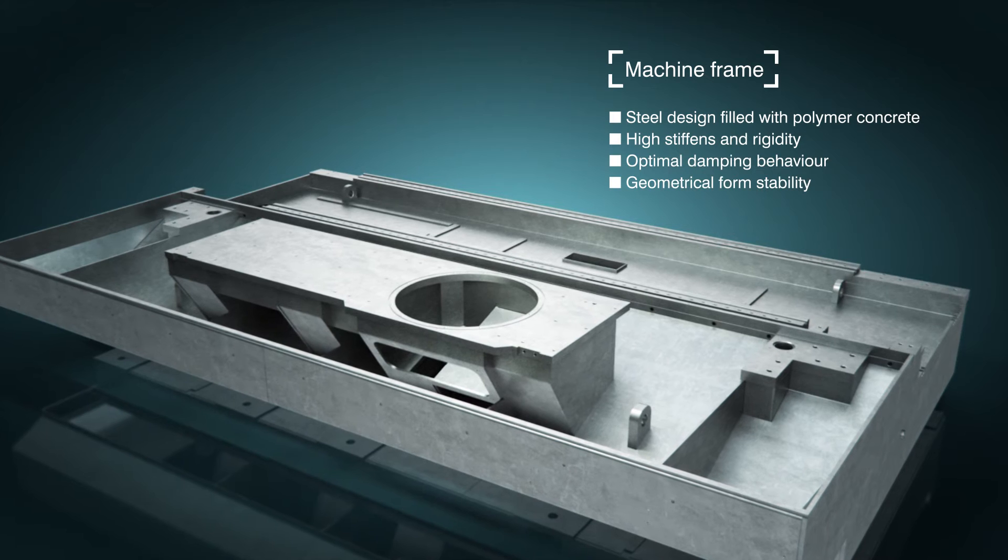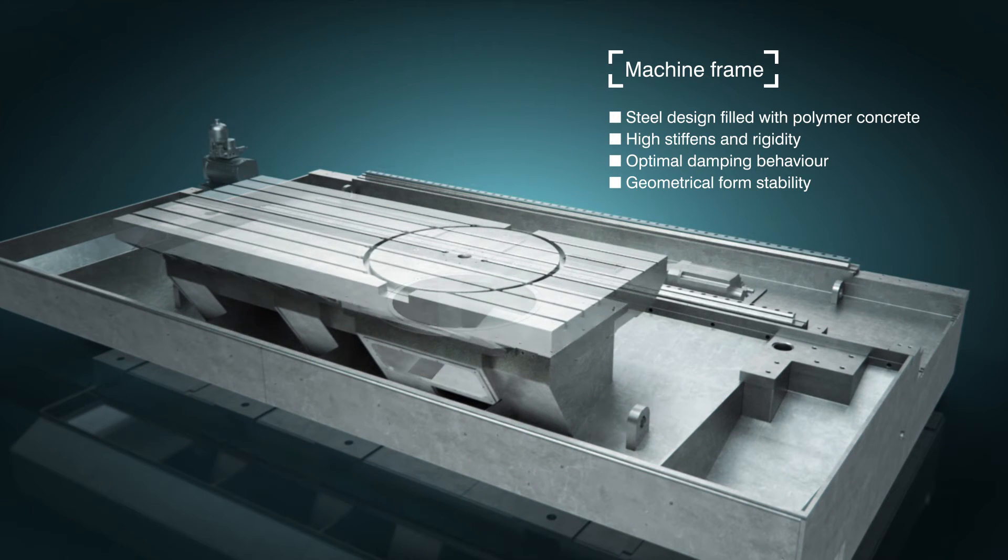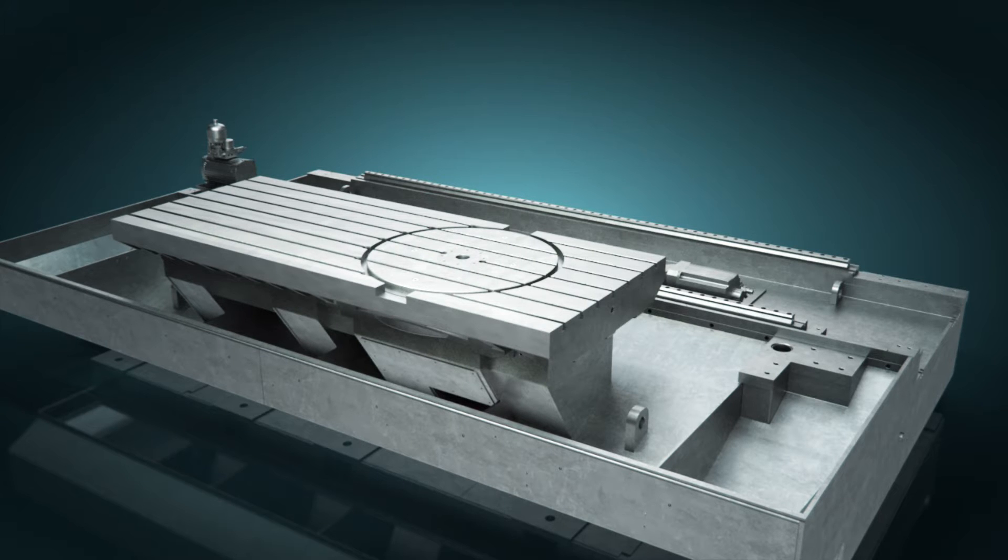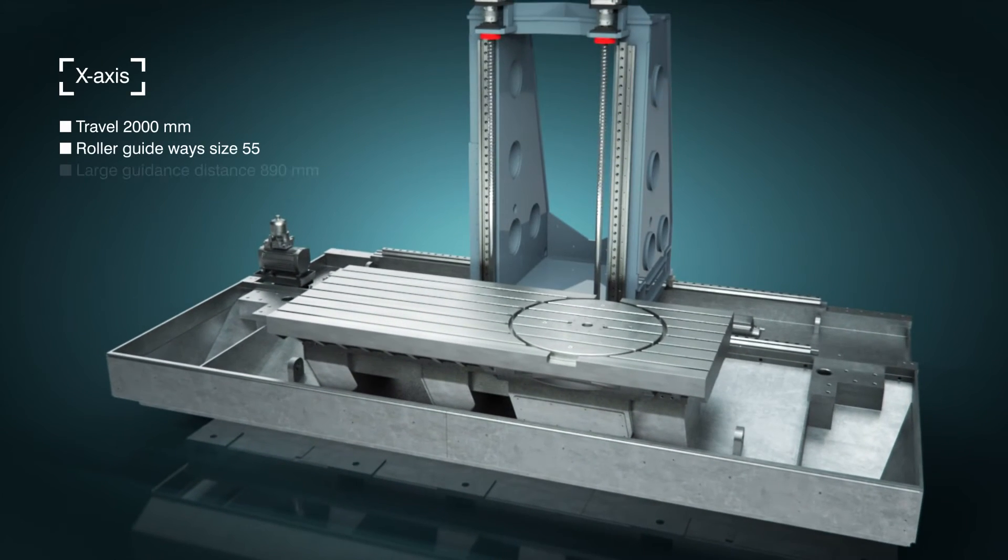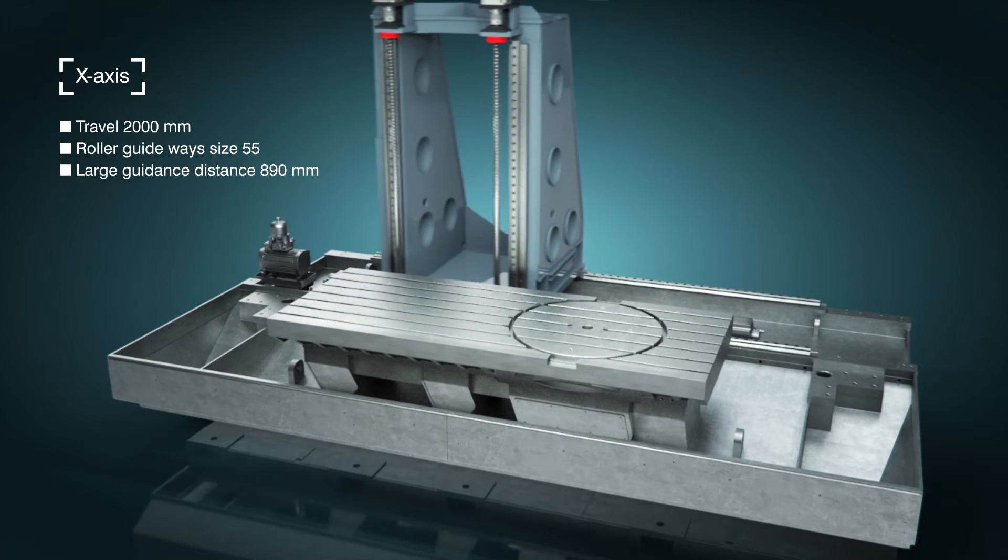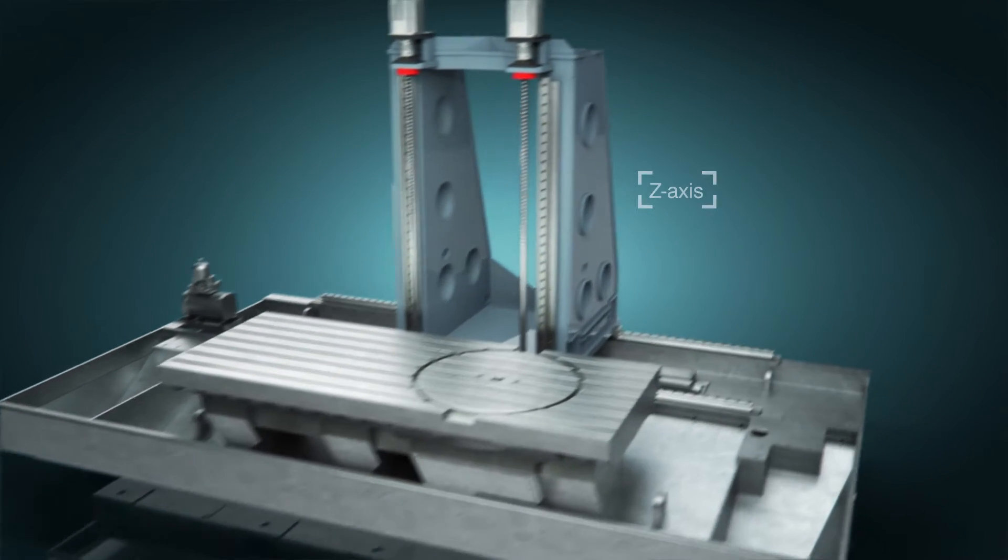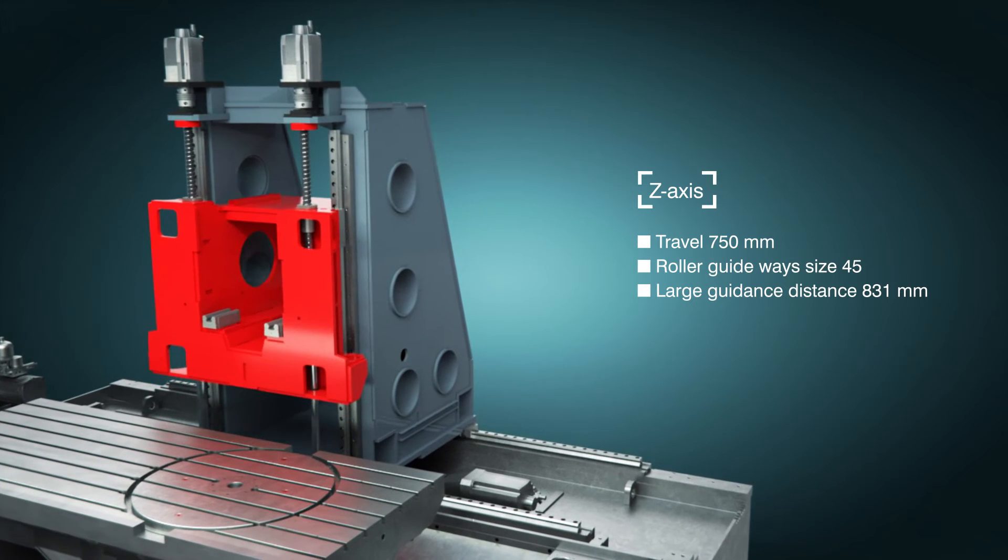The MMV 2000 guarantees more stability and thus more precision than similar machines available on the market. The dynamic linear axis, featuring large travels and a high rapid traverse rate of up to 50 meters per minute, provides sufficient space and dynamics for large, heavy workpieces.